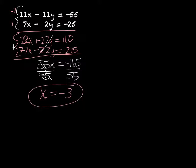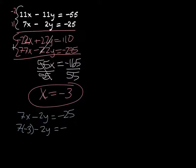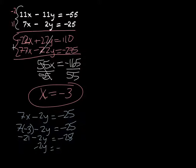To solve for y, I substitute x equals negative 3 into equation 5: 7 times negative 3 minus 2y equals negative 25. That gives negative 21 minus 2y equals negative 25. Adding 21 to both sides: negative 2y equals negative 4. Dividing by negative 2, y equals 2.